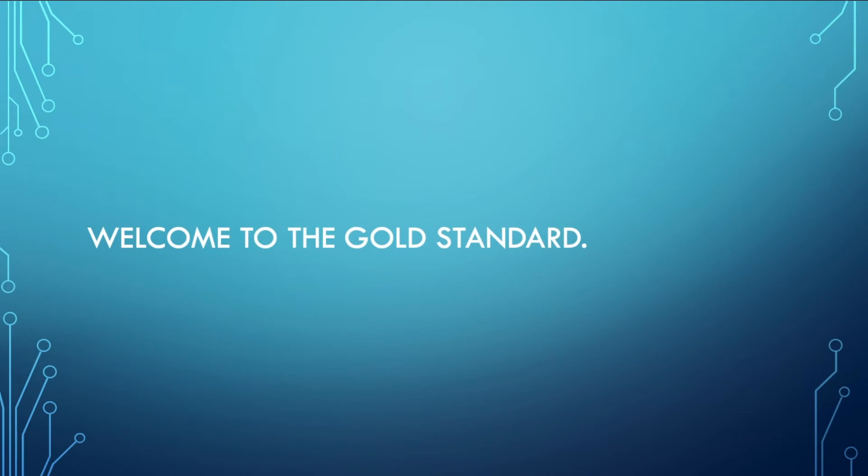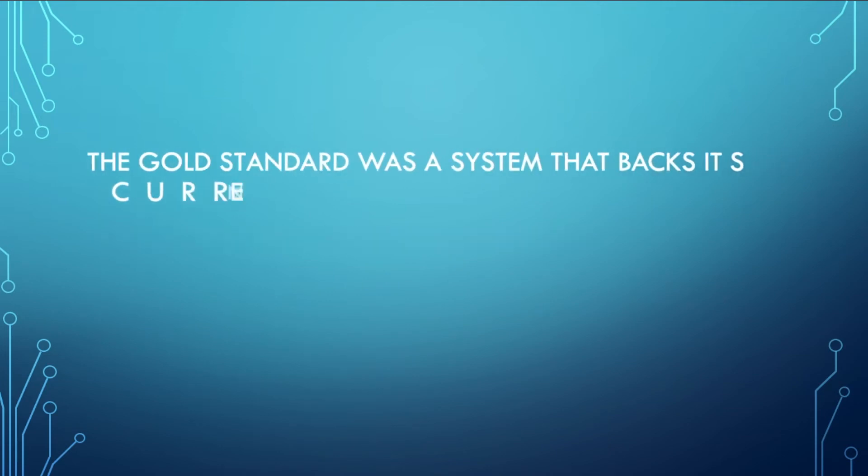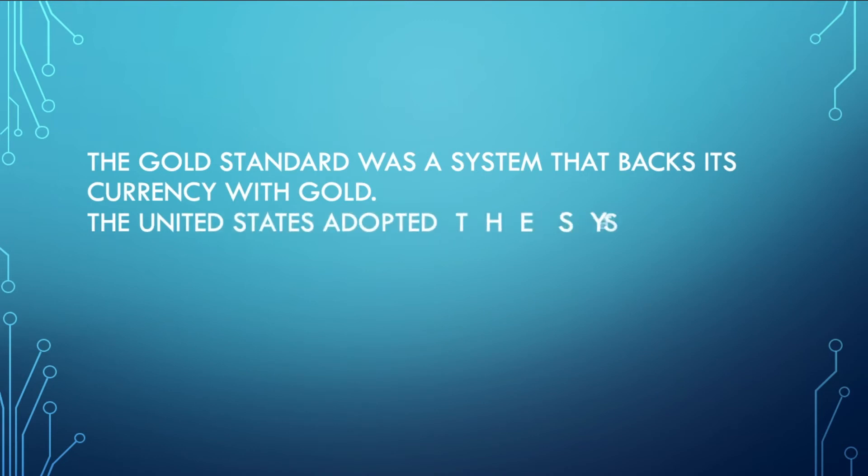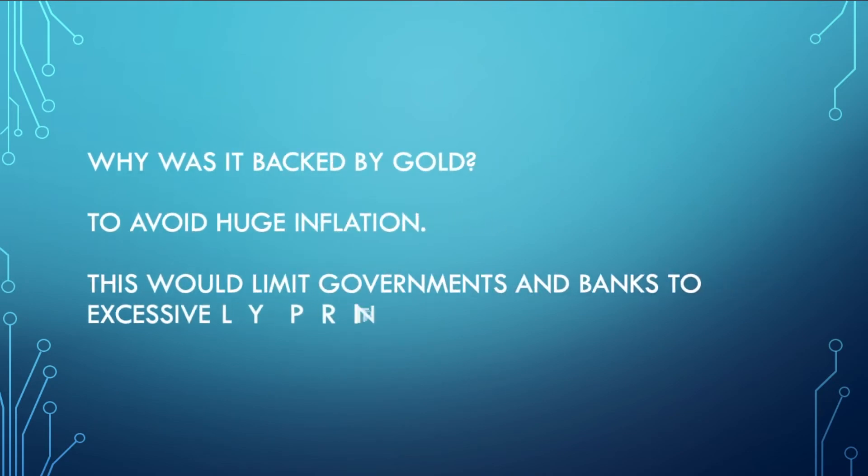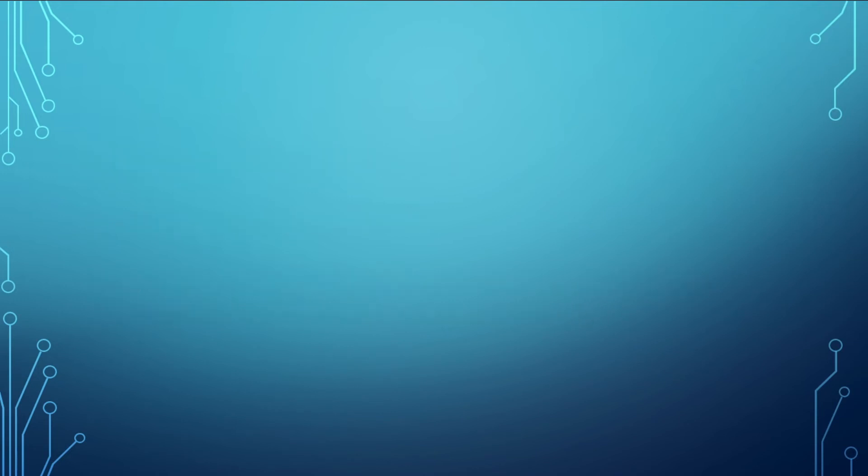Welcome to the gold standard. The gold standard was a system that backs its currency with gold. The United States adopted the system and traded one ounce of gold for $20.67. Why was it backed by gold? This would limit governments and banks to excessively print paper currencies. So it was the gold that had value.